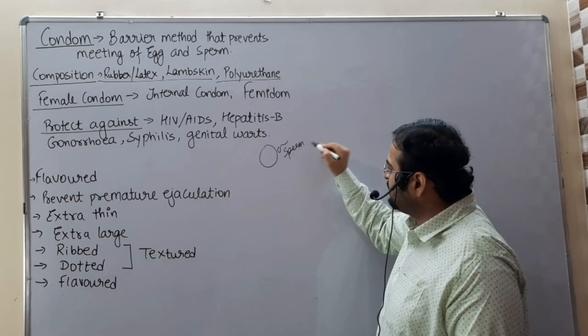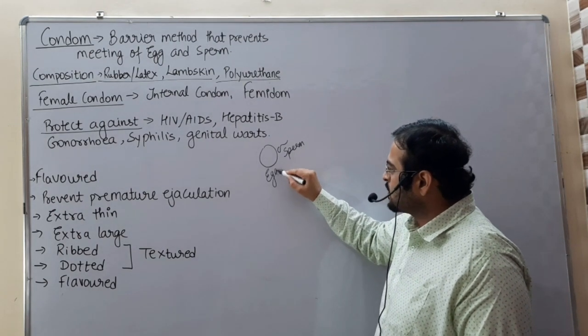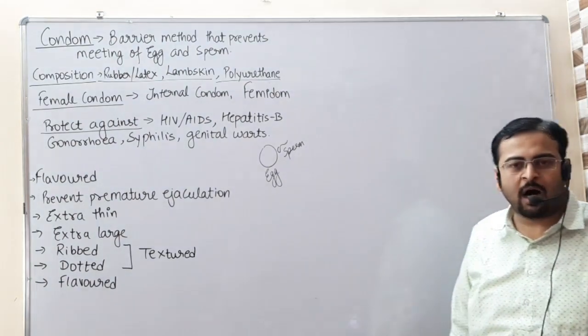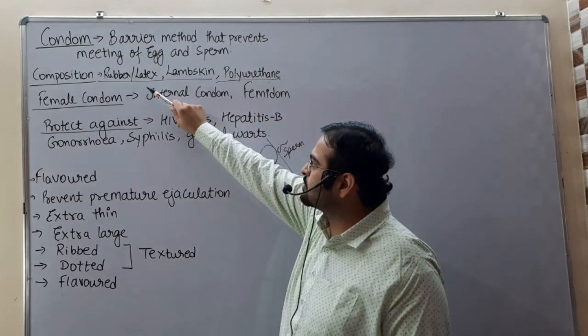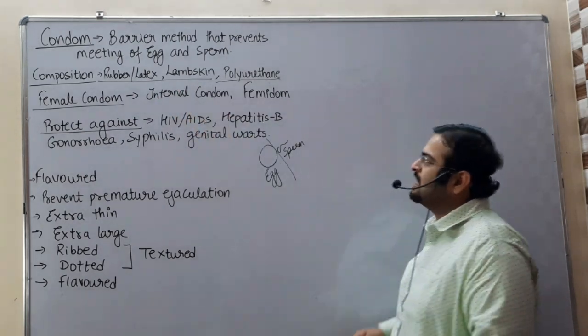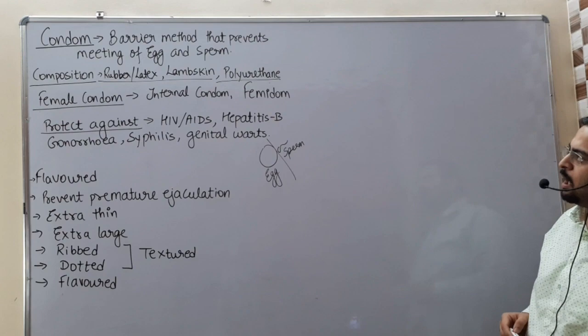Condom is a device which prevents meeting of egg and sperm, and it is made up of rubber, latex, lamb skin, or polyurethane.